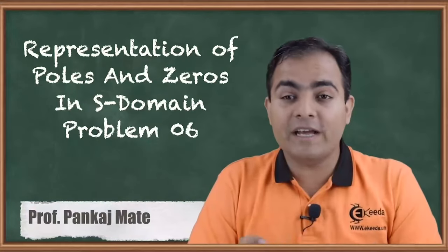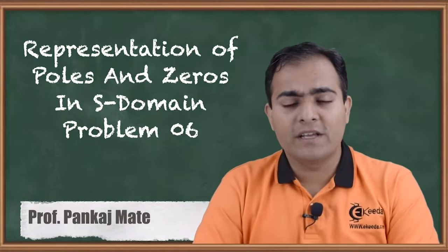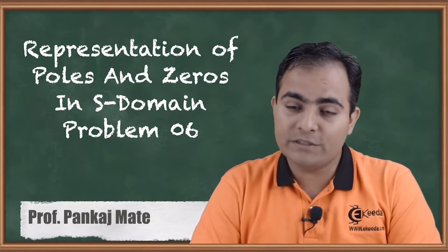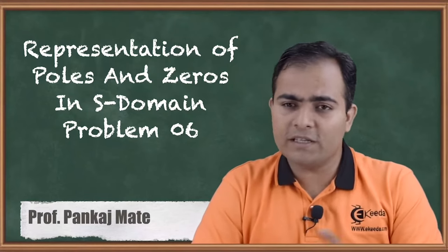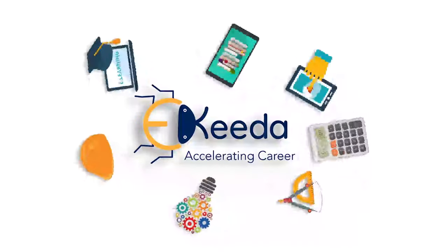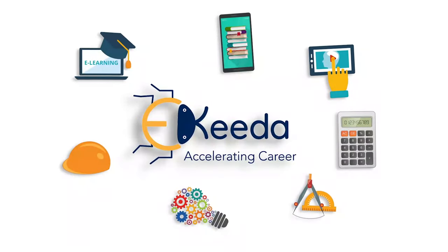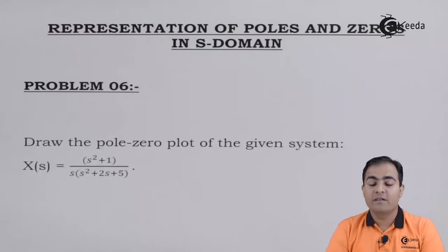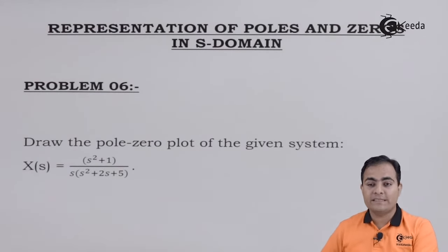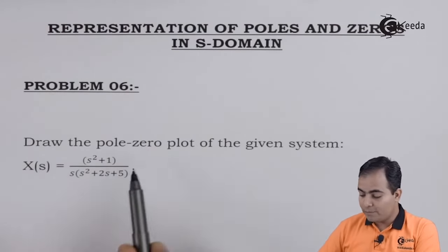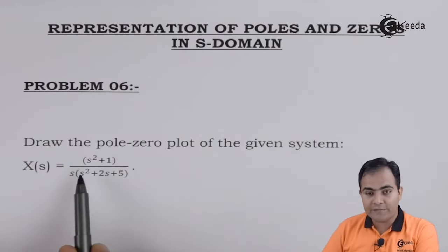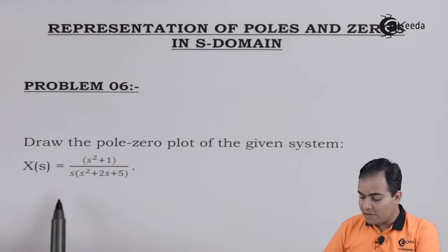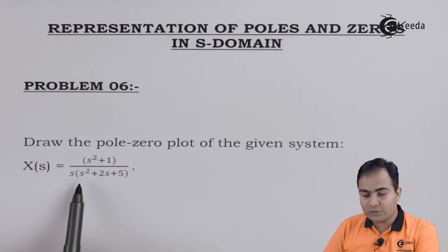Hello friends, today we are going to study a numerical which is based on representation of poles and zeros in the s-domain, or the Laplace domain. We will first look at the question and then move on to the solution. The problem is to draw the pole-zero plot of the given system, where X(s) equals (s² + 1) divided by s times (s² + 2s + 5).